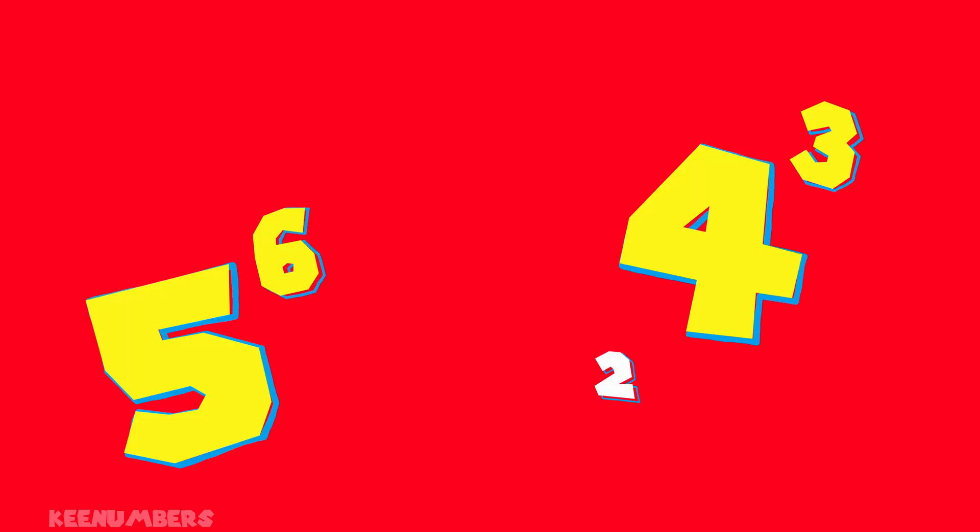Take this single light bulb. If it's off, that's 0. If it's on, that's 1 in the binary system, or 2 to the 0 power. Don't worry if that doesn't make sense right now — you'll learn more about exponents later.